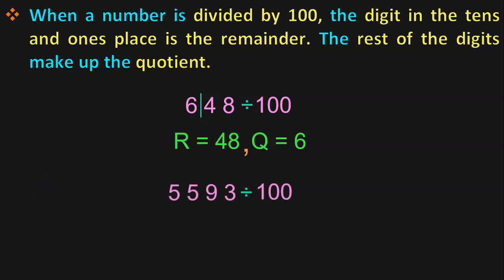Let us take another example. Here, we have a 4-digit number 5,593 divided by 100. As per the rules, let us draw a line after the 10's place. The digit in the 10's and the 1's place is the remainder. So, the remainder is 93 and the quotient is 55.